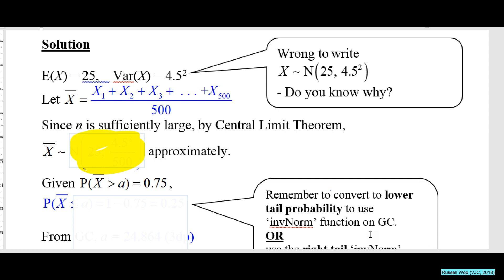What's the mean? The mean should be 25. The variance of X̄ should be 4.5 squared divided by n, which is 500. If you are fast enough, you can actually find A on your own. Not difficult, you should be able to find A on your own.